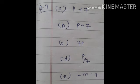C: P multiplied by 7, तो 7P. Then after D: P divided by 7, तो denominator में ही 7 आएगा. आप 7 divided P करोगे तो wrong होगा. E: 7 subtracted from minus M, तो minus M minus 7 हो जाएगा. 7 को subtract करना है minus M में से. Remaining questions आपको practice में करने हैं.